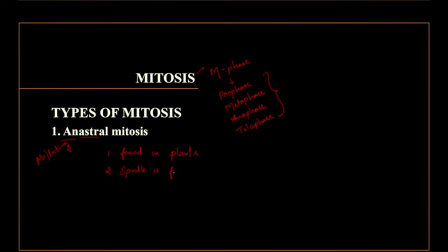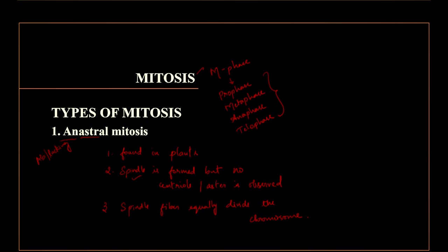In anastral mitosis, spindle is formed but no centriole or aster is observed. The spindle fiber equally divides the chromosomes.